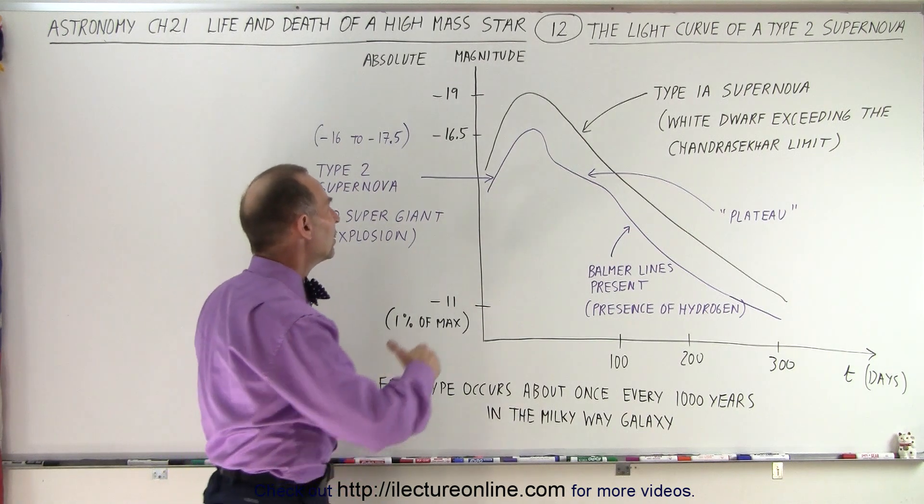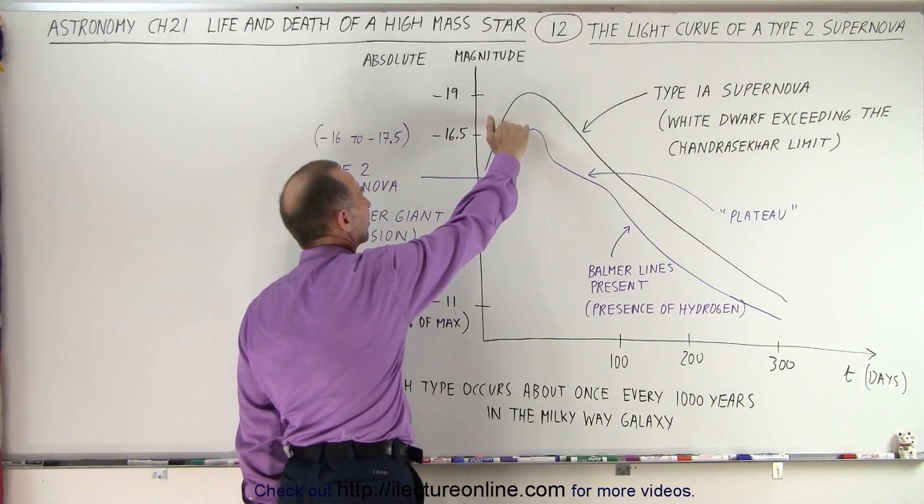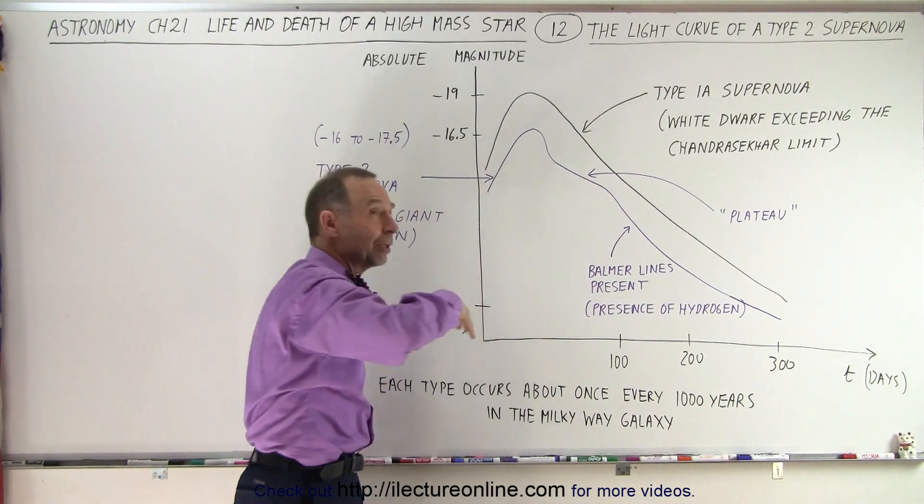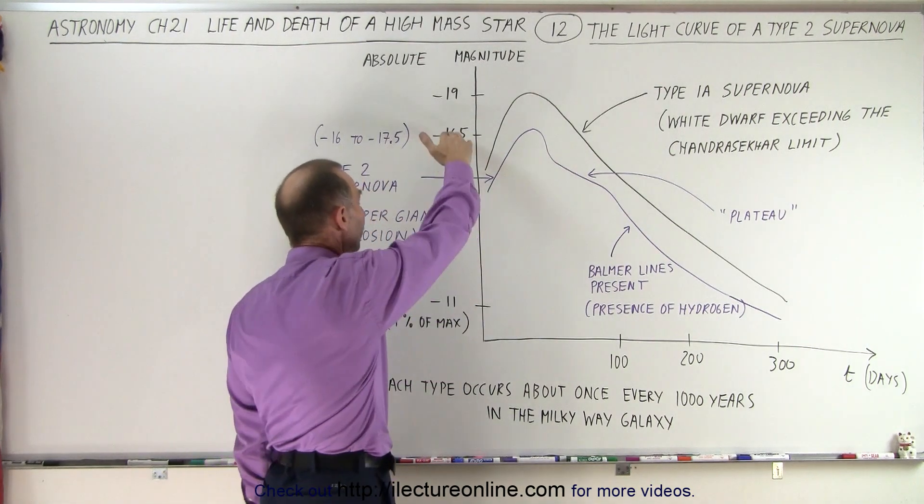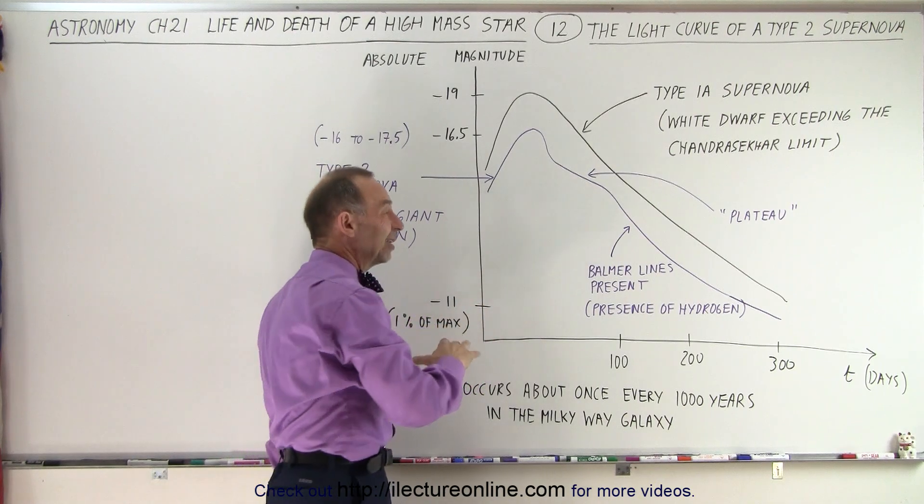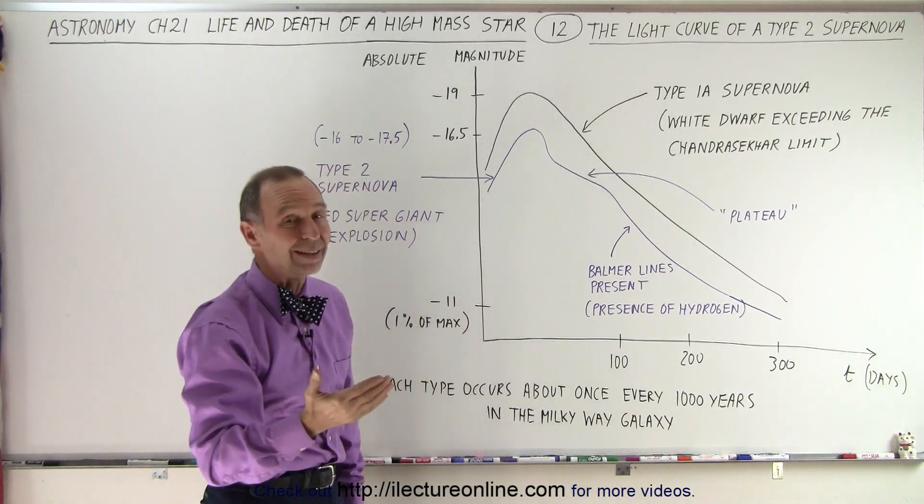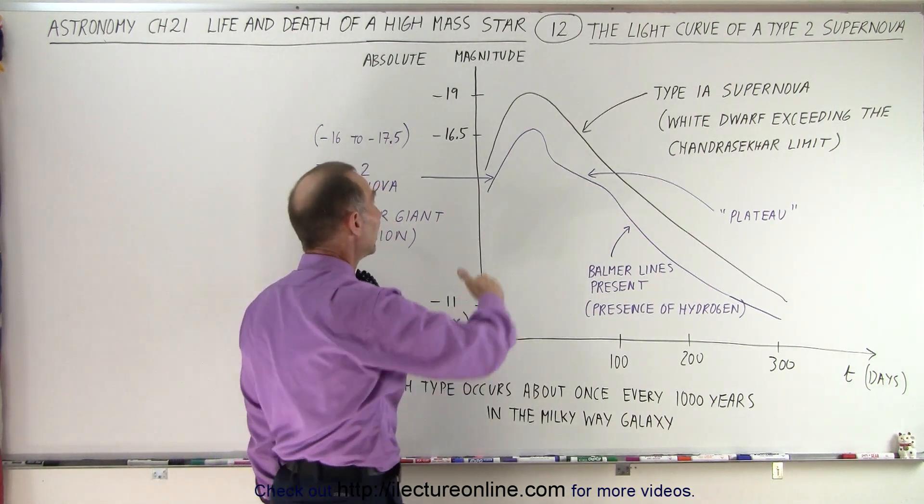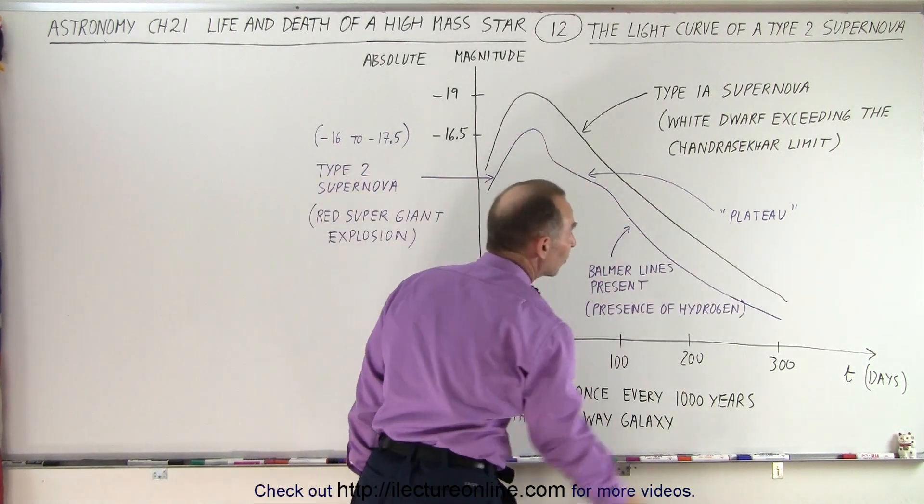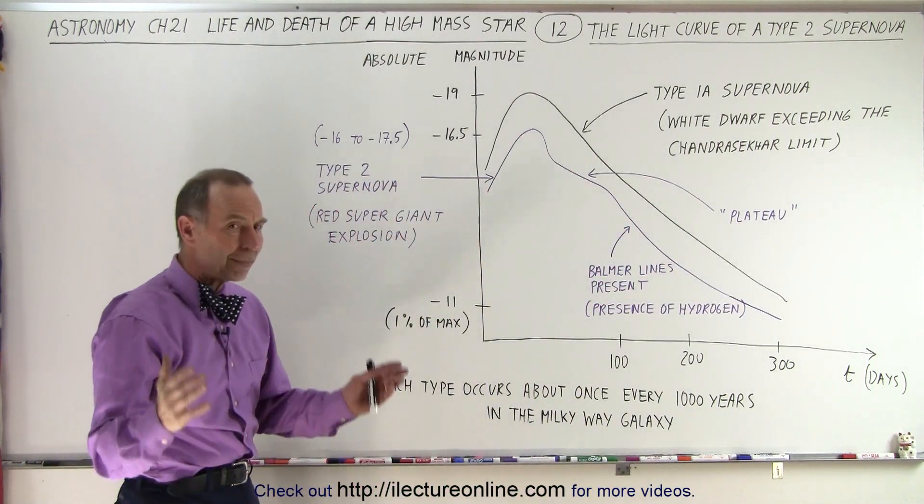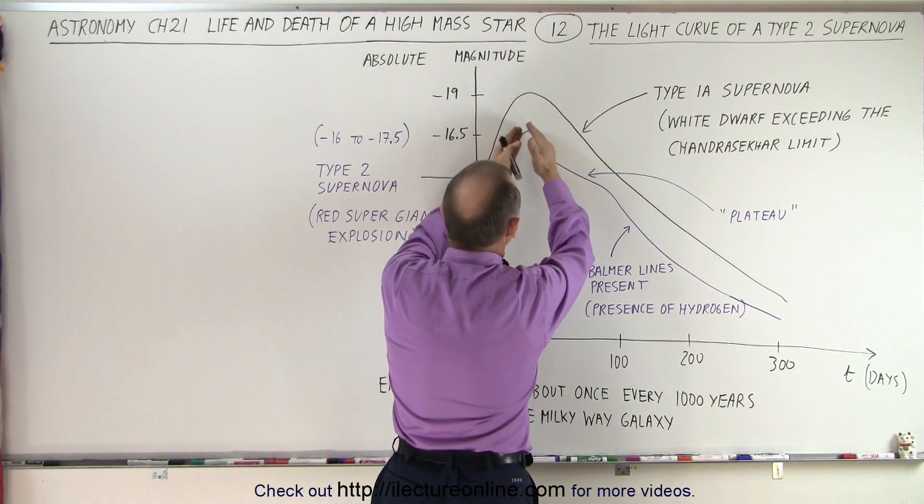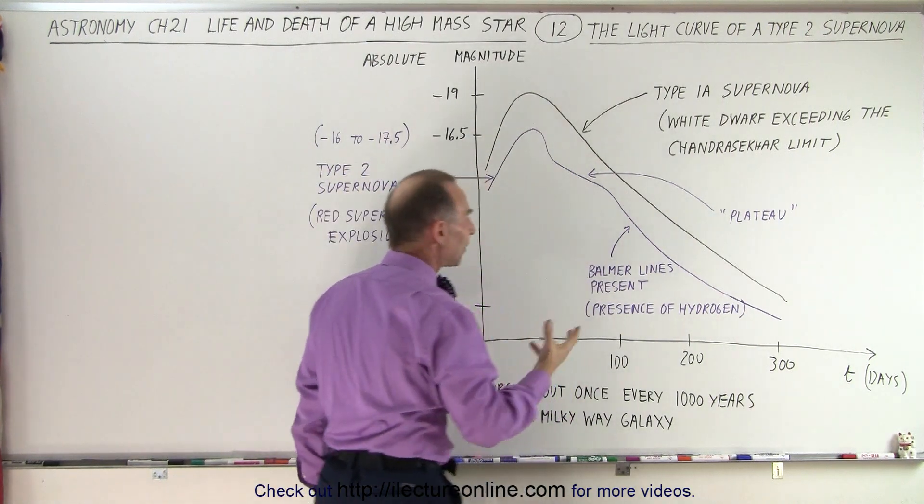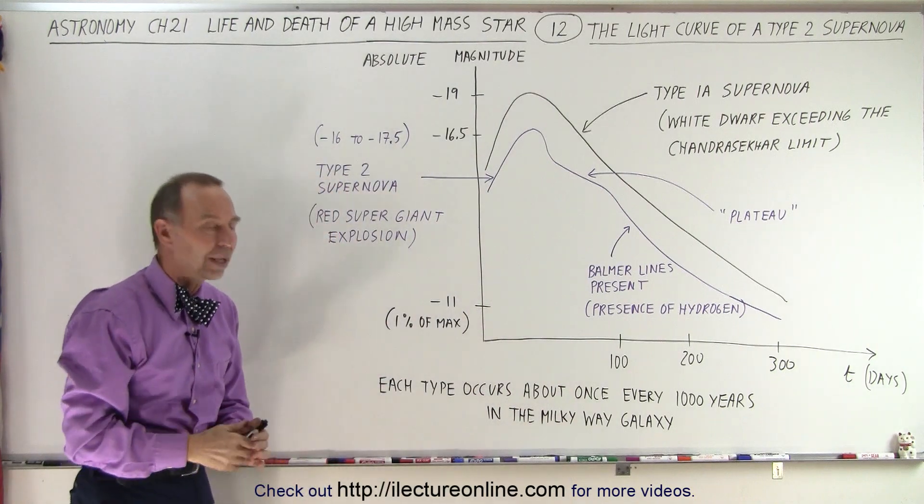So you can see that the brightness goes from about a minus 16.5 which is probably close to almost a billion times the brightness of the sun down to minus 11 which is then about maybe 10 million times the brightness of the sun in a matter of about 300 days. The time that we can really see it very bright is probably about several days at the peak right here where it absolutely is phenomenal in how bright this can be.